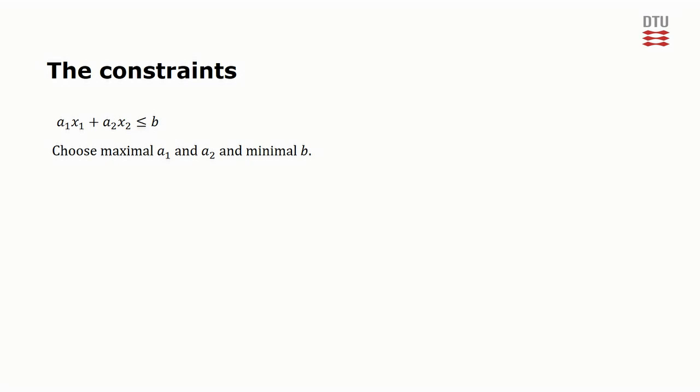Naturally, if the constraint was a greater than or equal to constraint, we have to pick the minimal value of a1 and a2 and the maximal value of b. Robust optimization does not handle equality constraints.